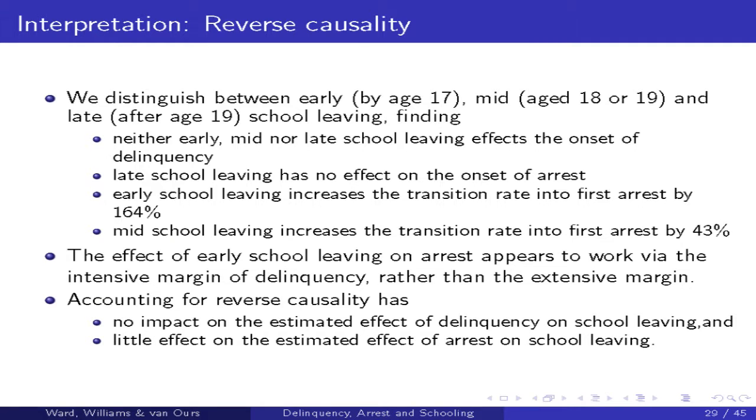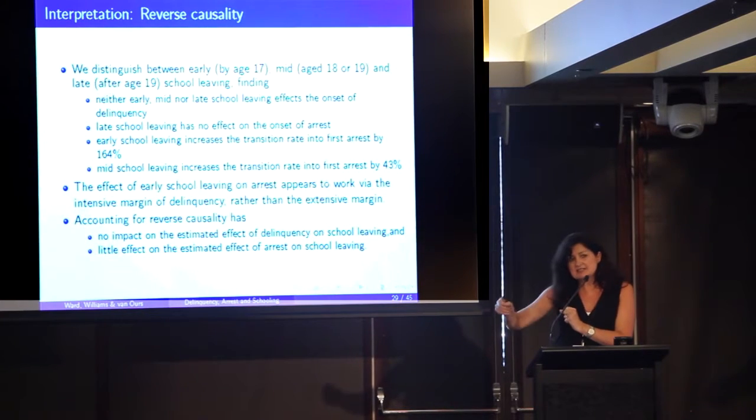We were puzzled by why school leaving would lead to arrest but not to delinquency. When we looked at the data, cutting it at school leaving and examining offending behaviour before and after, we found that early school leaving doesn't make you become delinquent — but amongst those who are already delinquent, they start offending more intensely, with more crimes, and more severely — the dollar value of crimes increases. So it seems that school leaving intensifies and escalates existing delinquency, increasing the probability of eventual arrest.